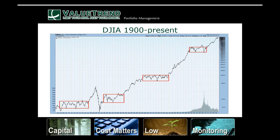Here we have probably the most dominant sideways market in history, between 1965 and 1982 — something like 17 years where the Dow could not crack 1,000. This was the era when Nixon was impeached, and the Cuban Missile Crisis was in there as well. But the market couldn't break 1,000, and finally it did. It broke out, tested a little bit, and then the greatest bull market in all history began.